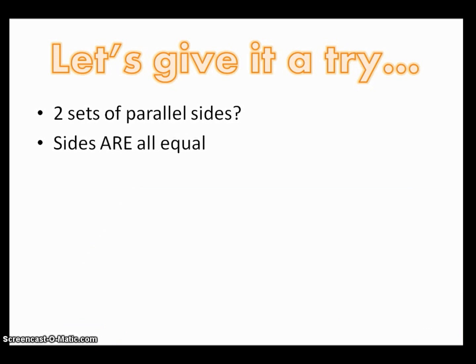Alright, and what about if there's two sets of parallel sides and the sides are all equal, but they are not all 90 degree angles? And that would be a rhombus.